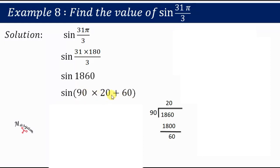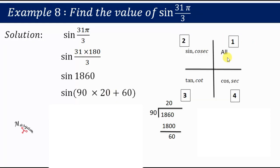Here 20 represents the quadrant — this is the 20th quadrant. Since we are adding something to the 20th quadrant, we jump into the 21st quadrant. If there were a minus sign, we would remain in the 20th quadrant. Counting the quadrants: 1st, 2nd, 3rd ... up to 21st — we land in the first position of the cycle, i.e., the 21st quadrant.